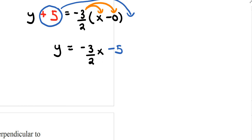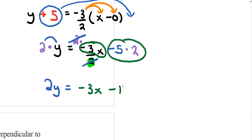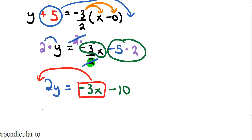One extra step: convert to standard form. The only denominator is 2, so multiply everything by 2. 2 times y is 2y. The 2s on the x term cancel, leaving negative 3x. And negative 5 times 2 is negative 10. Moving negative 3x to the other side gives the final answer: 3x plus 2y equals negative 10.